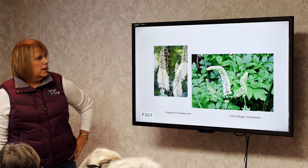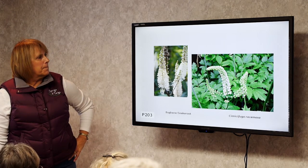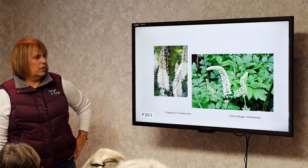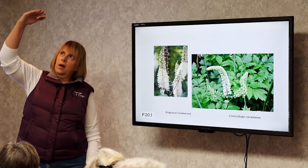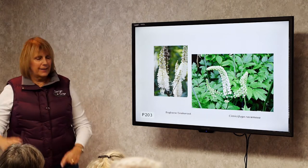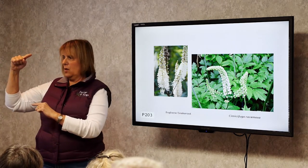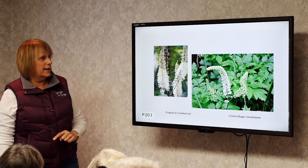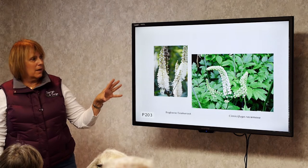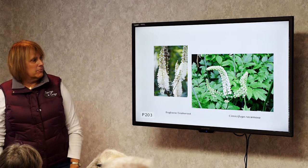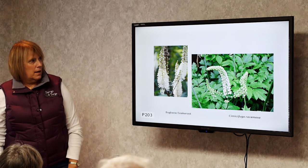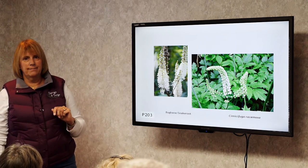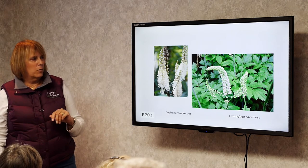Cimicifuga, bugbane, snakeroot. It smells wonderful — the scent is very strong. There are cultivars that range in height, and the flowers are tall. It blooms in July and is great for bees. It needs part shade to part sun and a little bit of moist soil.